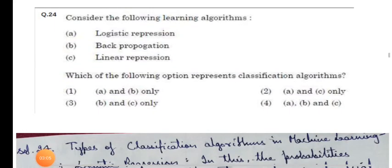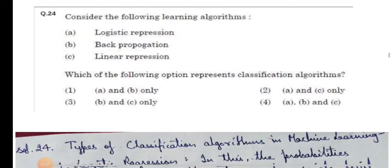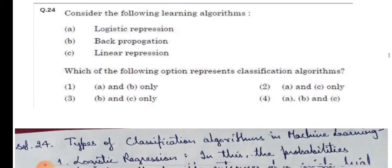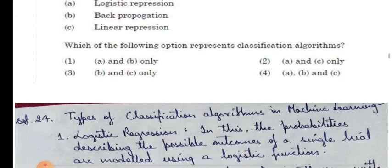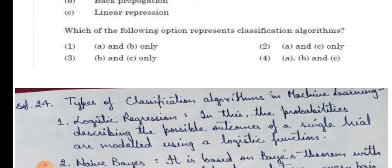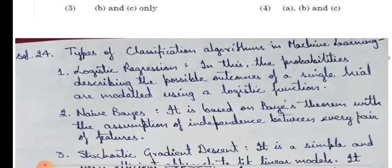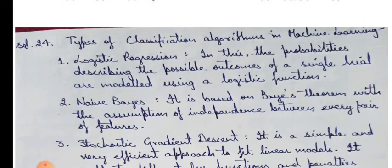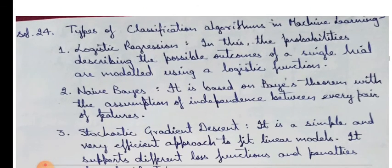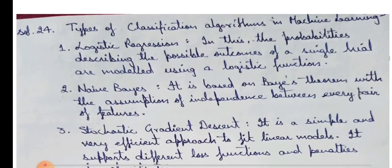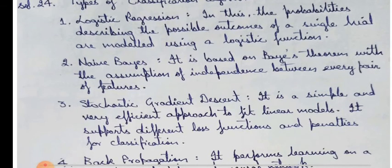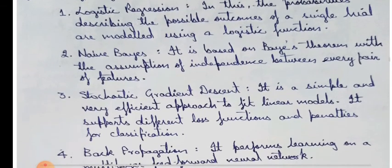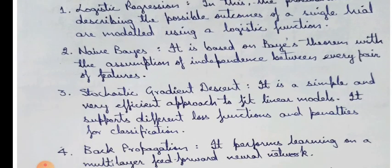Moving on to our next question, consider the following learning algorithms: logistic regression, backpropagation, and linear regression. Which of the following options represents classification algorithms? So let's see what are the types of classification algorithms in machine learning. Logistic regression: In this, the probabilities describing the possible outcomes of a single trial are modeled using a logistic function. Second is naive Bayes. It is based on Bayes theorem with the assumption of independence between every pair of features.